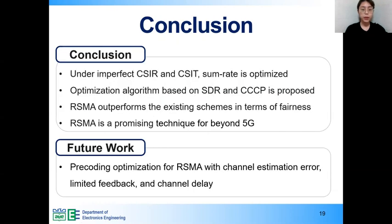In this paper, we have optimized a precoding design of RSMA under imperfect CSIR and CSIT for sum-rate maximization. For that, we propose alternative algorithm based on SDR and CCCP. The simulation result has shown that RSMA has robust performance under imperfect CSIR.